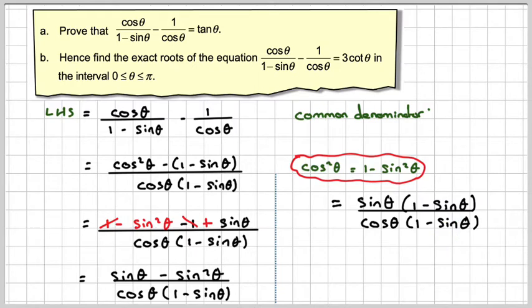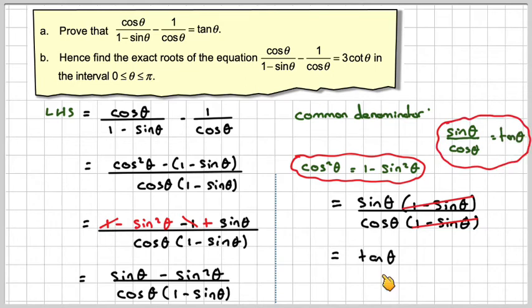Obviously, these two now cancel out, and we use the idea that sine theta over cos theta is tan. And we get tan theta, which is what we were asked to show. So it's equal to the left-hand side.